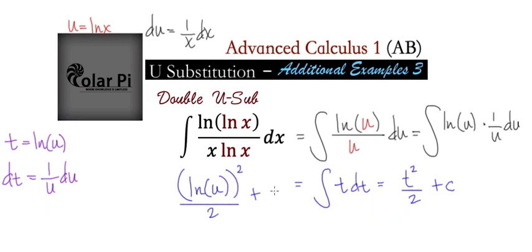But we started with an x in the argument of the natural log. So we need to get back. And that just requires that we claim this u to be the natural log of x. So finally, our final answer is going to be this here.